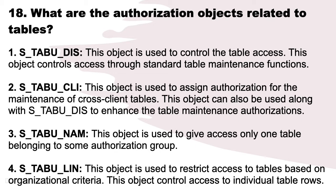Number 3: S_TABU_NAM. This object is used to give access to only one table belonging to a specific authorization group. Number 4: S_TABU_COL. This object is used to restrict access to tables based on organizational criteria. It controls access to individual table rows.